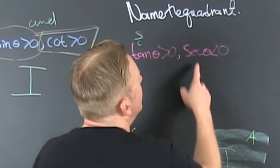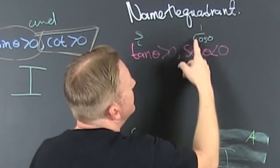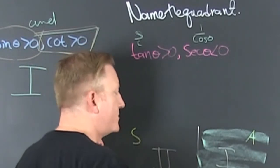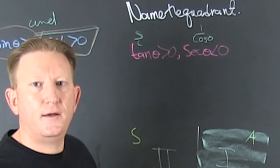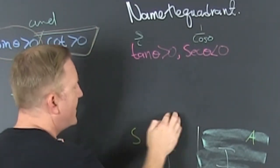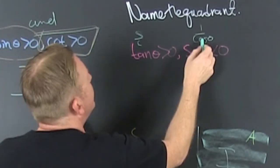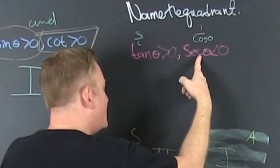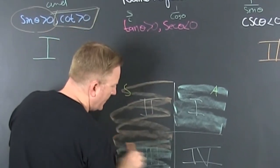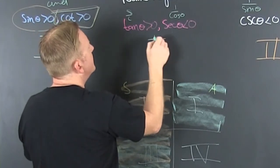Those are the two quadrants where tangent is positive. Now we're looking for the secant. The secant is one over the cosine, so they're going to have the same sign as the cosine. The cosine is x. Where is the cosine negative? The cosine is negative when x is negative, which is on the left side. Where do they overlap? Down here in quadrant three.